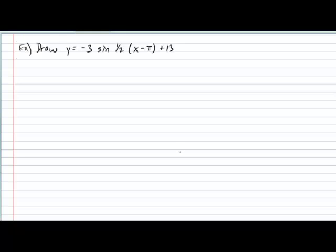With all these clues in hand, we are ready to try and draw a transformed sine function. For our example, I'd like to draw the graph belonging to the function y equals negative 3 times the sine of half times x minus pi, plus 13. First, let's clearly identify our variables: a equals negative 3, b equals one half, h equals pi, and k equals 13.